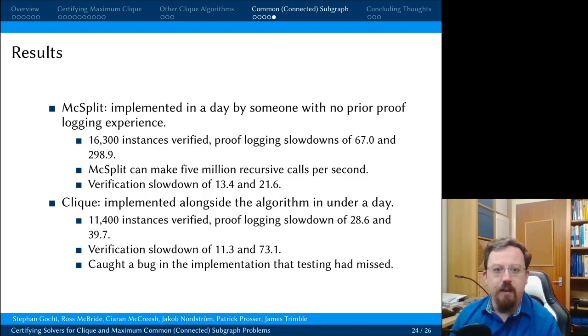In terms of results, in both cases it took around a day to implement proof logging. The underlying solvers are much more difficult to implement than that. The slowdowns are fairly substantial. We see for McSplit slowdowns of 67 to 300 for non-connected and connected. But then McSplit does make 5 million recursive calls per second. So this is perhaps not surprising. And verification is a further order of magnitude slower. And it's worth saying that when I was re-implementing the clique variant of this problem, I made a stupid mistake in how I was doing connectivity. Proof logging found this straight away. Testing would not have found it without an awful lot of effort. So I think I can say that it was actually less effort to implement this algorithm with proof logging than it would have been without, because I would have spent a lot more time trying to find that bug otherwise.